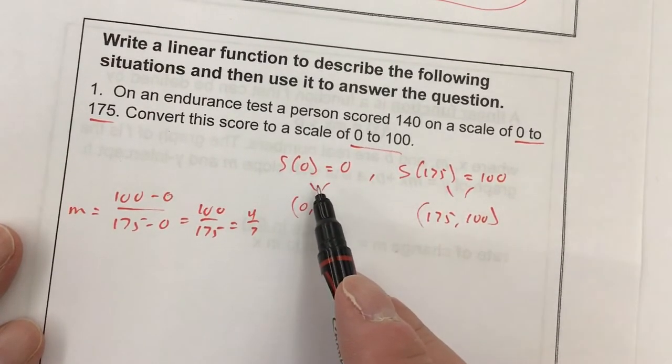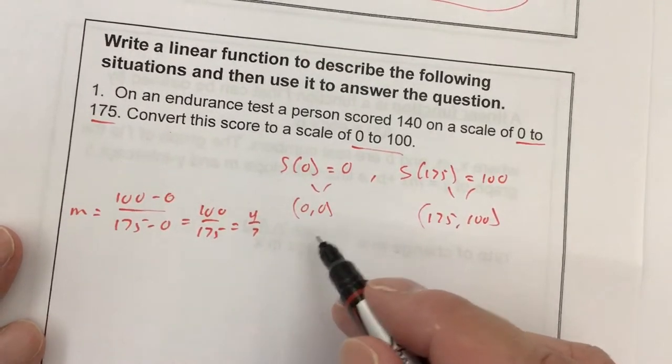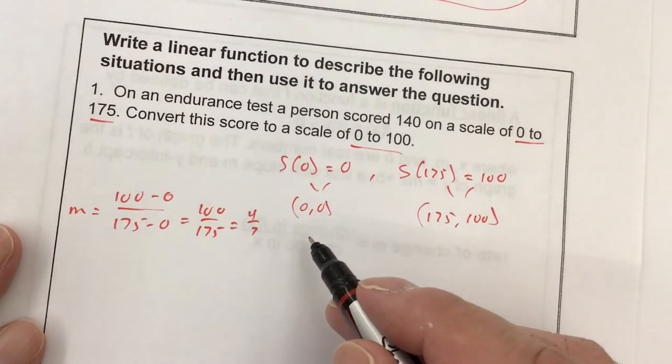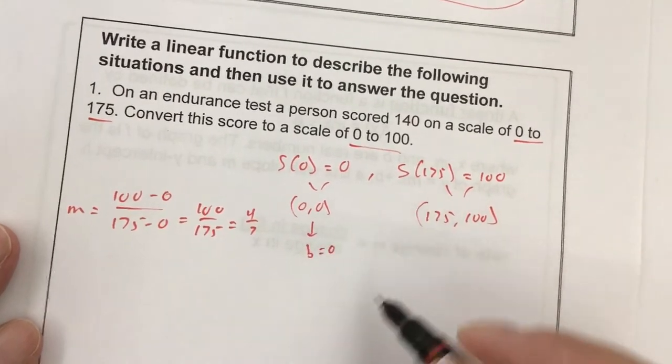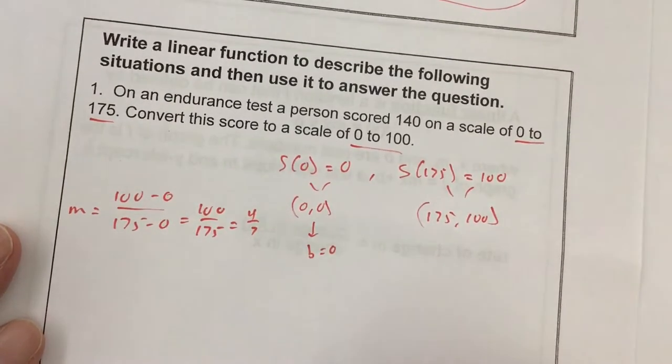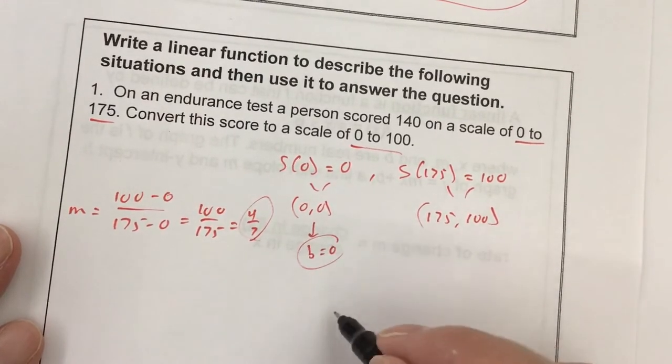It's easiest to pick the point (0, 0), I would think. Or think of it this way: what's my y-intercept? 0. Because (0, 0) is on 0 on the y-axis.